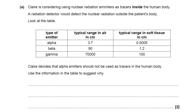Look at the table. The detector would be outside the patient's body — think about that diagram from the start. The type of emitter is listed: alpha, beta, or gamma. Typical range in air in centimetres: alpha is very low, beta is in the middle, and gamma is very high.